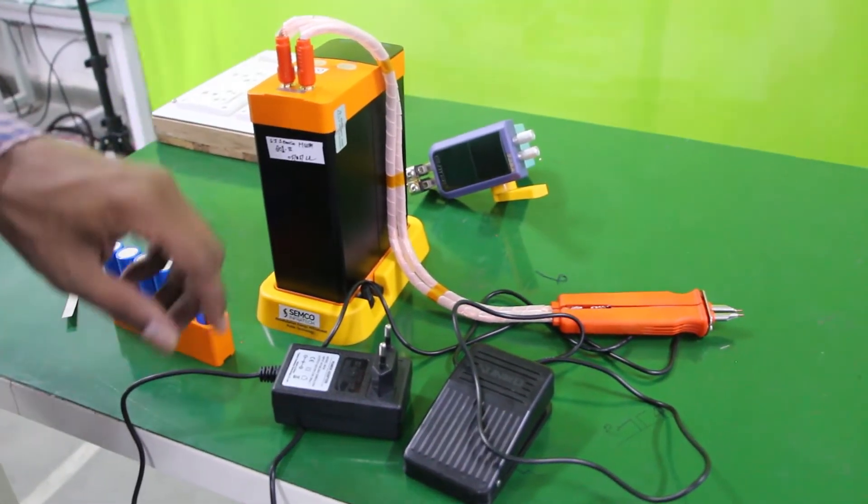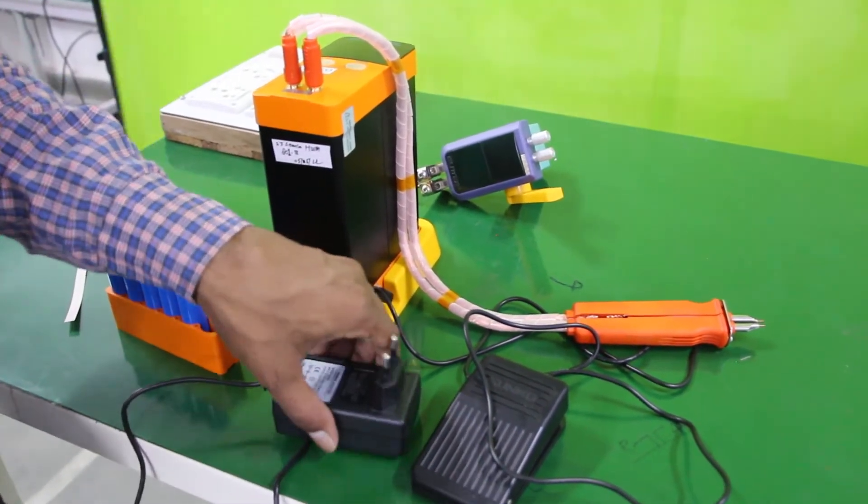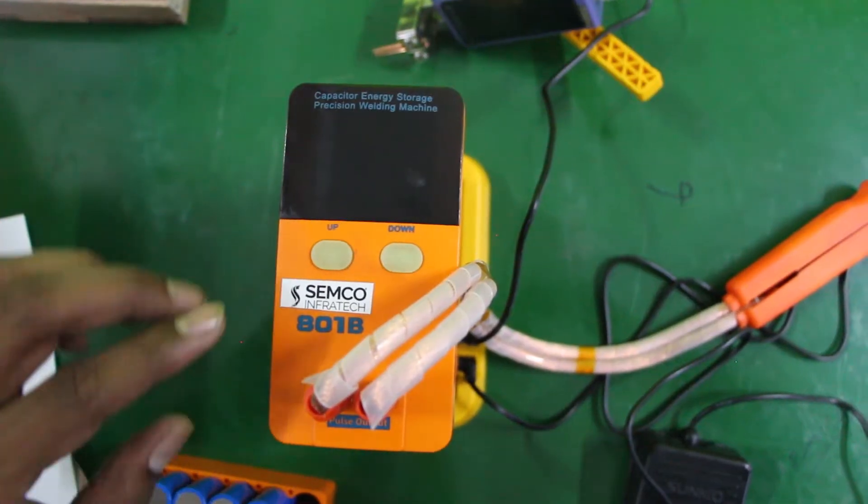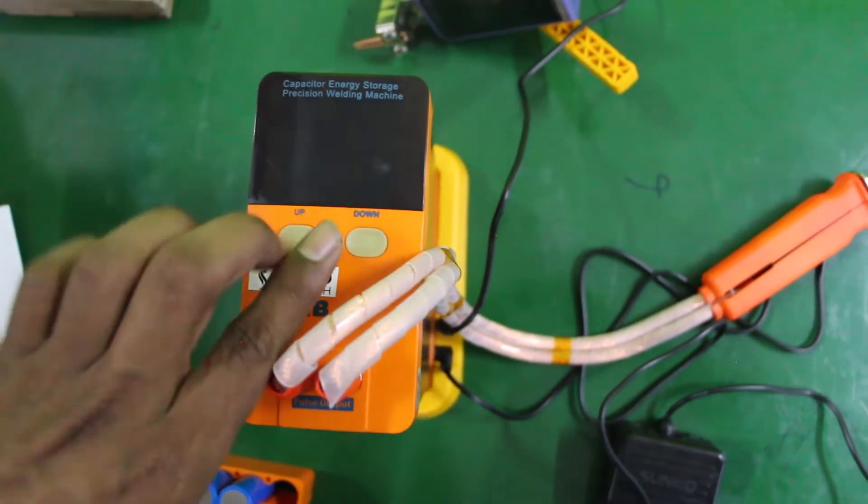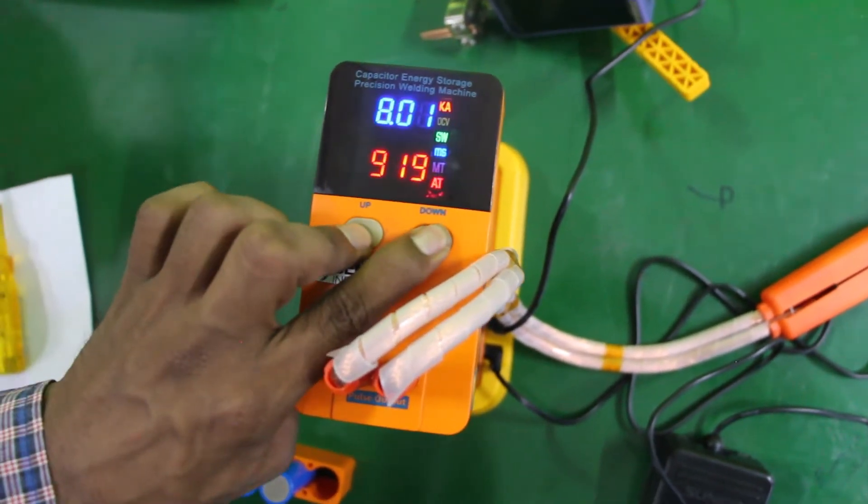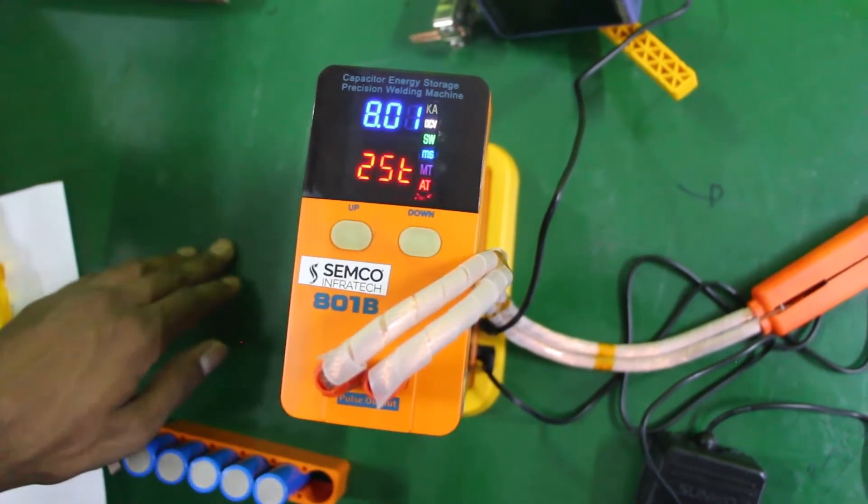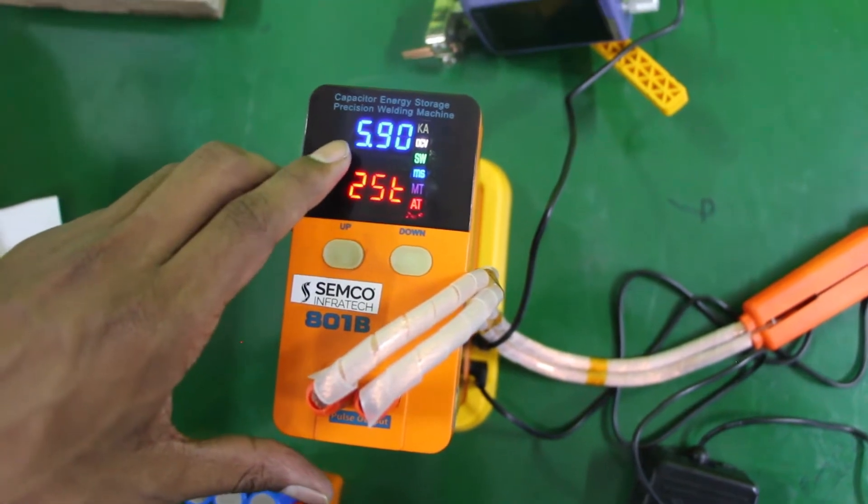Now I will show you how to work the machine. To turn on the machine, you press both buttons at the same time. You can see the voltage should be 5.2 to 5.8V for the capacitor energy storage.